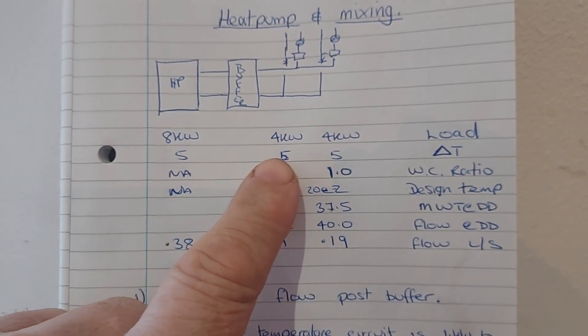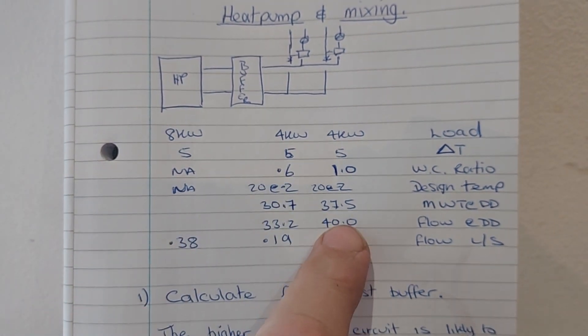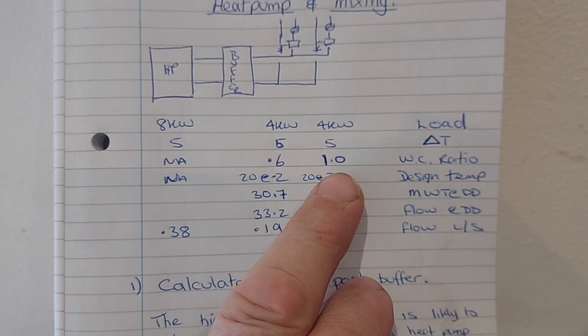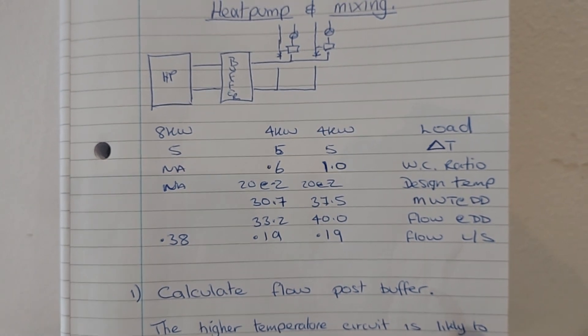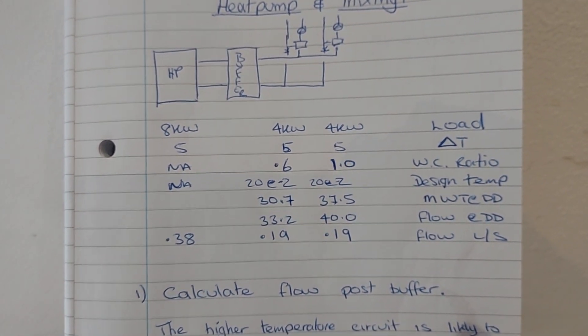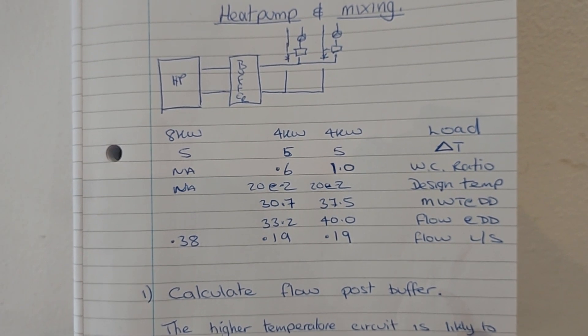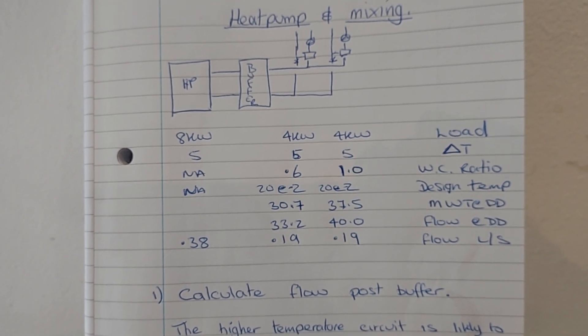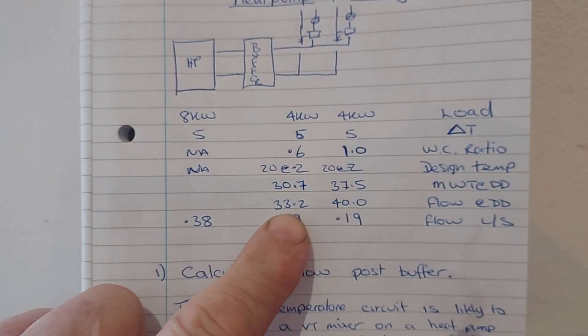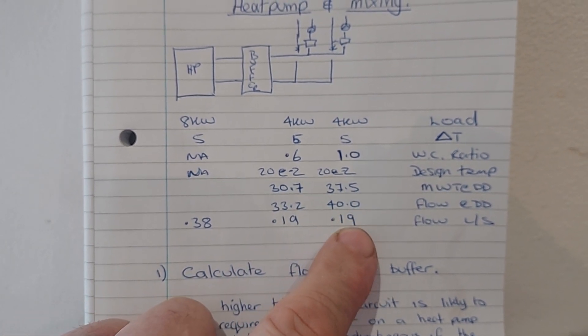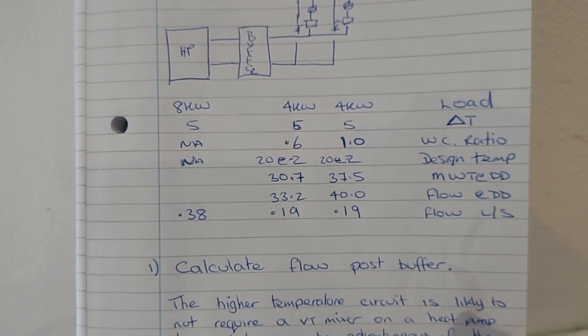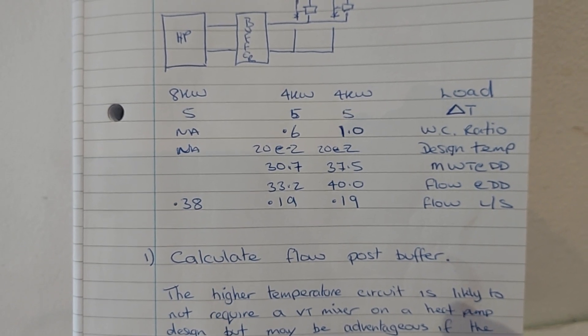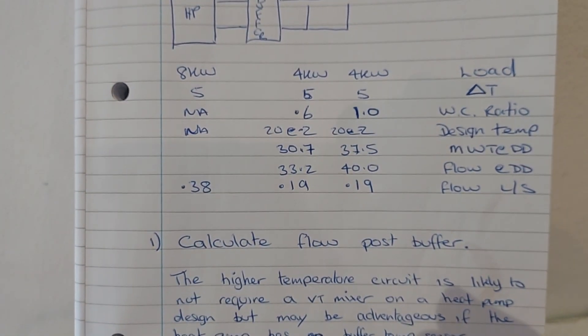Here we've assumed an 8kW system and we've got 4kW on both circuits. I've chosen a weather comp ratio of 0.6 and 1.0. I'll do a separate video on weather comp ratios, actually. I don't think I've done one yet. We've got a design temperature of 20 for the room, minus 2 for outside temperature, and that's going to give us a required flow temperature of 33 degrees and 40 degrees for our two circuits. The flow within those circuits for both circuits at 4kW and delta T5 is going to be 0.19 litres per second, and the flow rate for the heat pump is going to be 0.38.